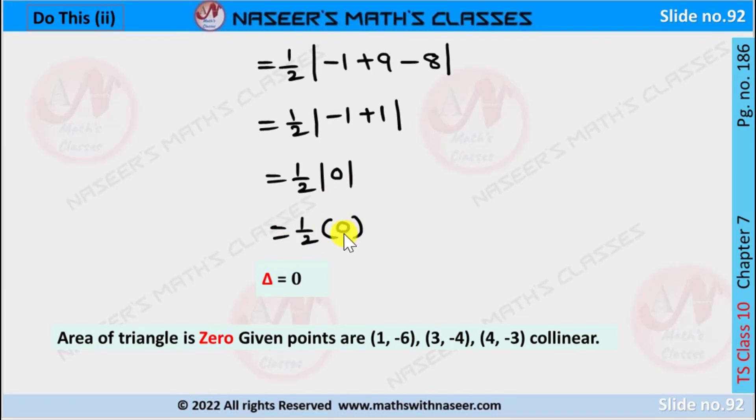Therefore the area formed by the given three points is 0. Therefore we can say that the given points are collinear, which means the points lie on the same line, so they do not have any area.